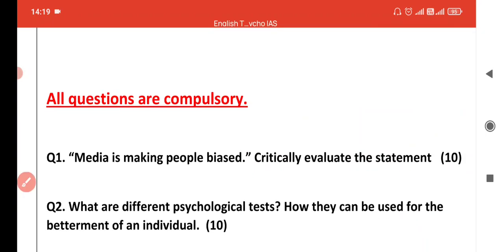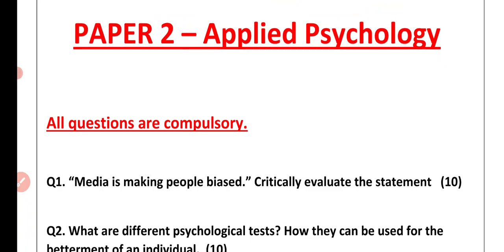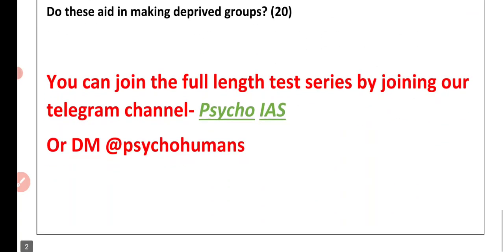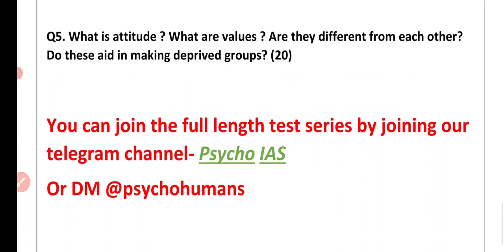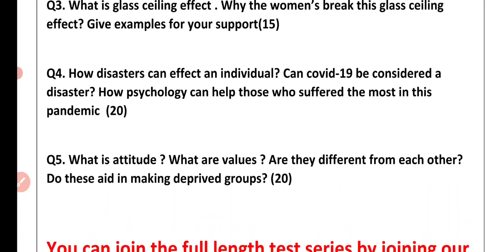You can opt for either of these; it's totally up to you and your choice. The basic course is for ₹999. The payment link will be given to you — just message us at @psychohumans and follow us on the Psycho IAS Telegram channel. We will provide the payment link, and after that you will receive the PDFs and revert back to us with your answers.